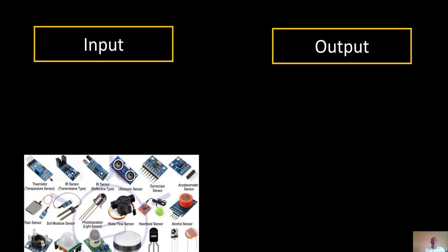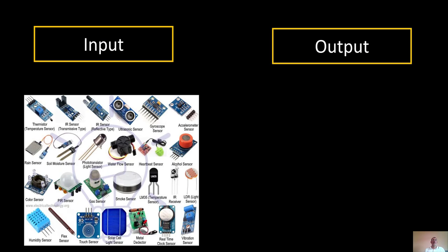With a microcontroller like Arduino, instead of an ear we use sensors. Here are a few examples: an ultrasonic sensor, used for distance and proximity measurement; a temperature sensor for measuring temperature; a gyroscope sensor — useful if you want to build a drone and know the X, Y, and Z coordinates; and a gas sensor, for example to detect gas leaks in your house.